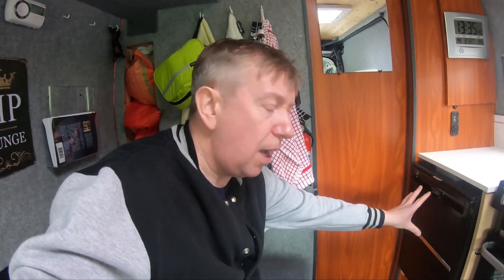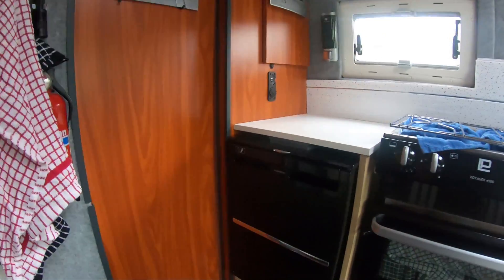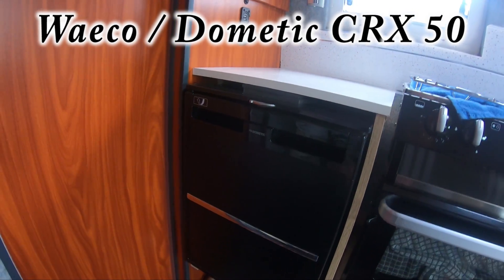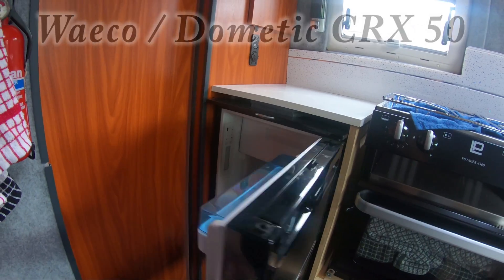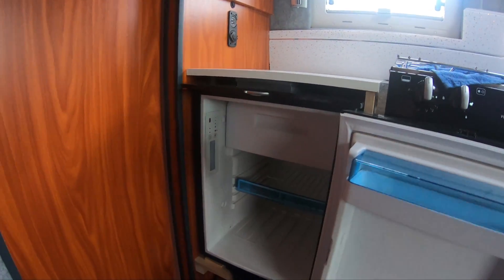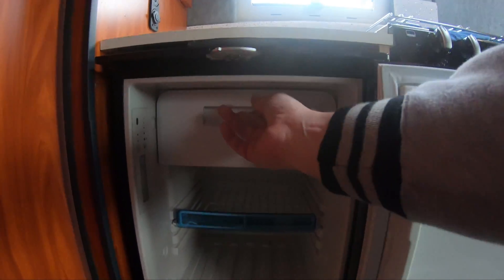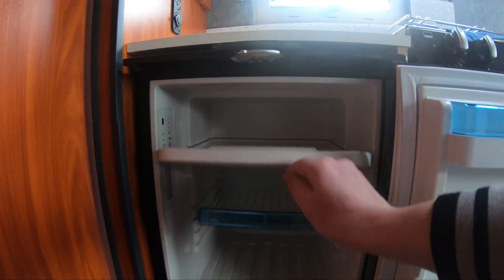Right then, welcome to my little camper van. Today's experiment is going to be about the fridge freezer. This is the Waco or Dometic CRX50 little mini fridge freezer. It's a 12-volt compressor fridge freezer. As you can see, it's mostly fridge, but it also has a small freezer compartment.